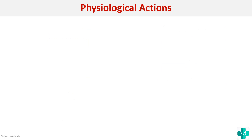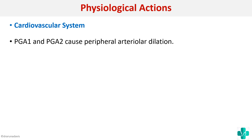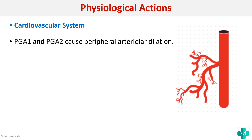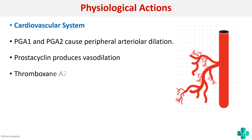Next we will see the actions on the cardiovascular system. PGA2 and PGA1 can cause peripheral arterial dilation — they dilate the blood vessels — whereas prostacyclin, that is PGI2, can produce vasodilation. Thromboxane A2 can cause vasoconstriction. Each prostaglandin can have different effects. PGA1 and A2 cause dilation, prostacyclin causes vasodilation, and thromboxane A2 causes vasoconstriction.